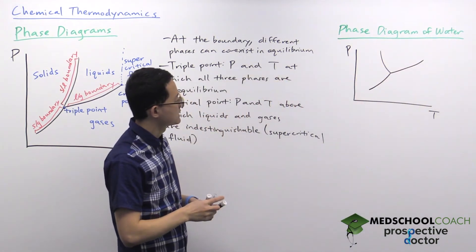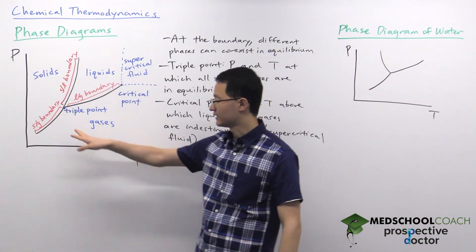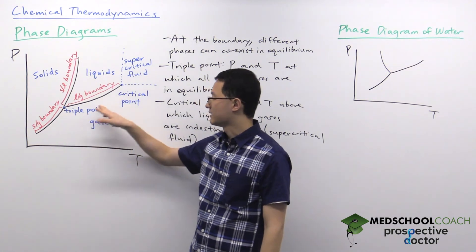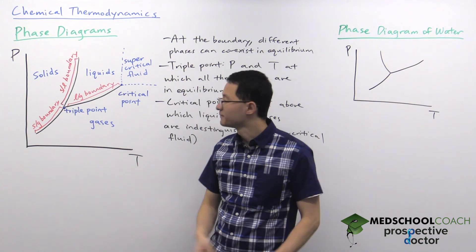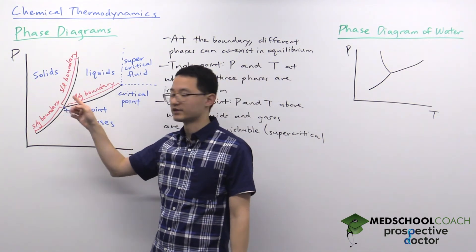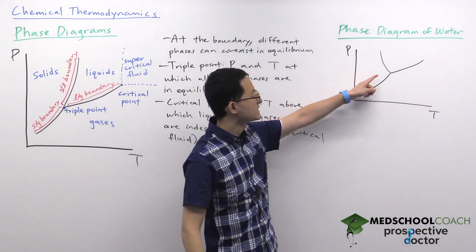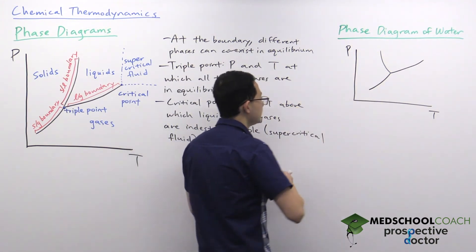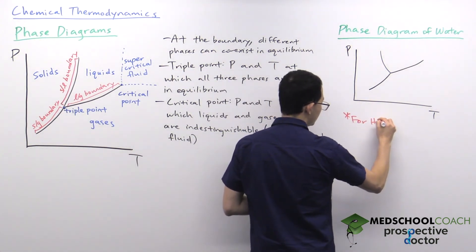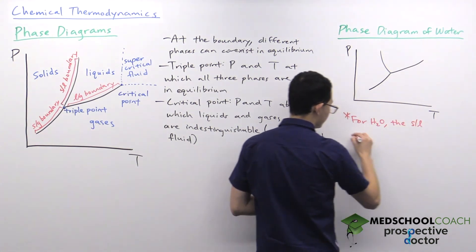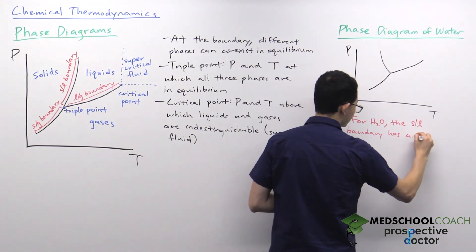What you should notice is that it's the solid-liquid boundary that differs. The solid-gas boundary looks the same and the liquid-gas boundary looks the same, but the main difference is the solid-liquid boundary. For most compounds, the solid-liquid boundary has a positive slope, but for water it has a negative slope — that is the key difference.